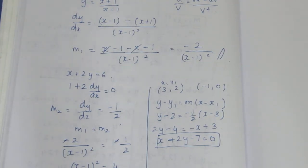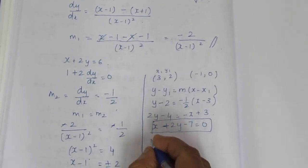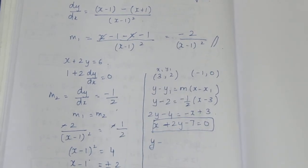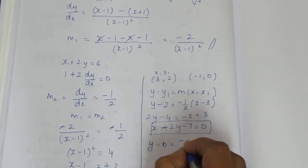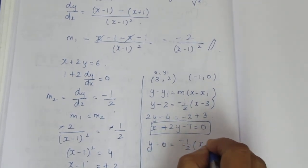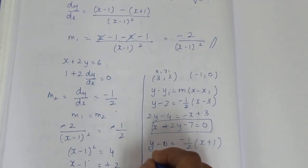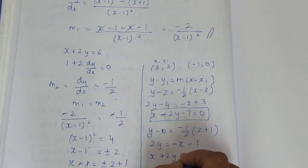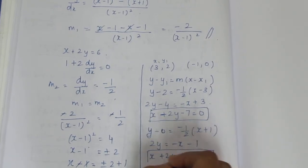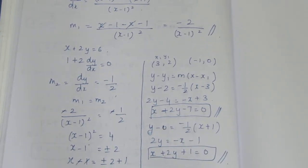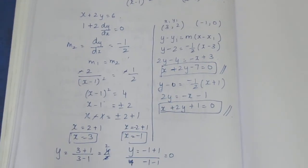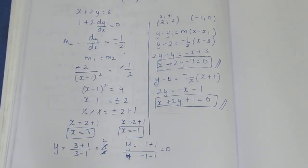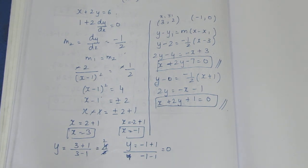For the second point (minus 1, 0), using the same formula y minus y1 equal to m into x minus x1: y minus 0 equal to minus 1 by 2 into x minus minus 1. Multiplying through by 2: 2y equal to minus x minus 1, giving x plus 2y plus 1 equal to 0. This is the second equation of the tangent. So the two tangents are x plus 2y minus 7 equal to 0 and x plus 2y plus 1 equal to 0.